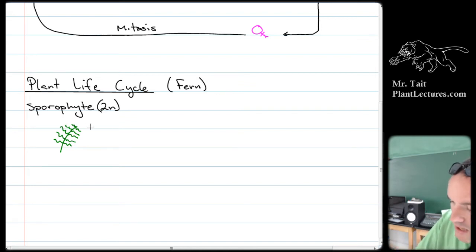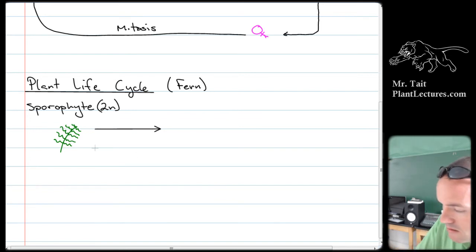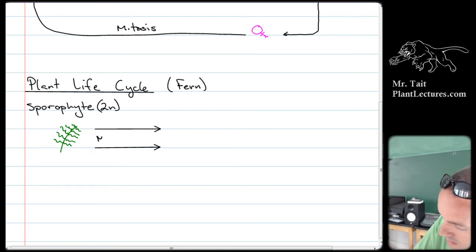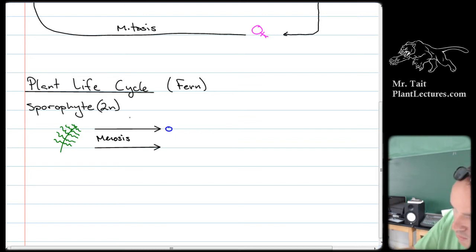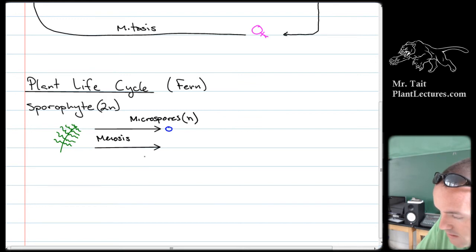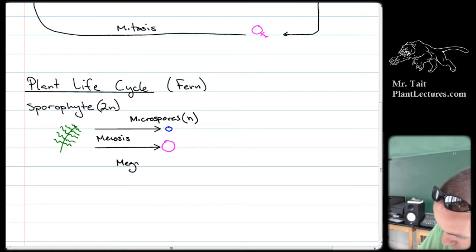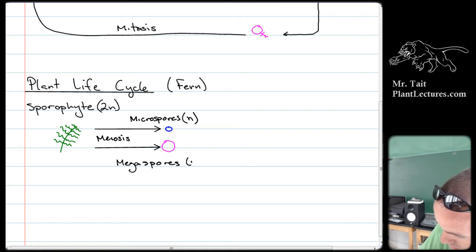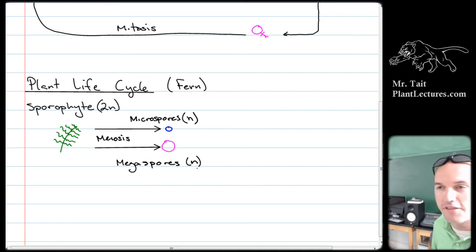The sporophyte undergoes meiosis and produces small spores called microspores, which are n. It can also produce larger spores called megaspores, which are also n. Megaspores are technically female and microspores are technically male.